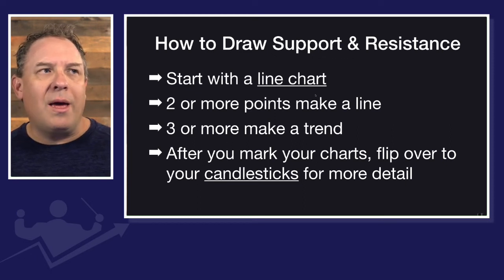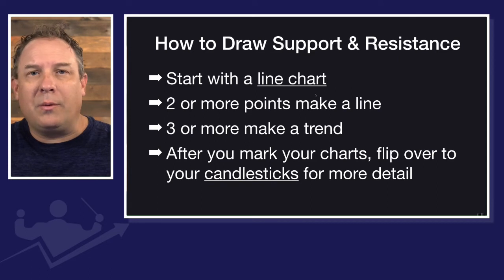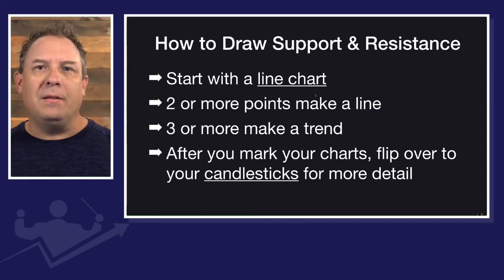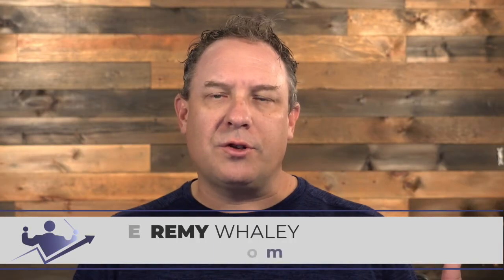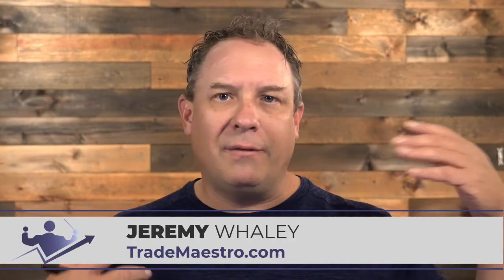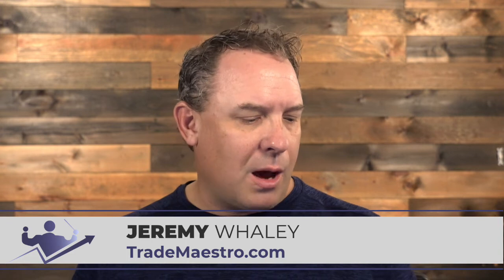So start with a line chart, then move over to a candlestick chart. You're looking for at least two points to establish the line, three points or more will make the trend. After you mark the chart, flip over and look at the candlesticks — you get adjustments or confirmation. Most of the time, the candlesticks just confirm what we've already seen. And now you've seen it — you know the process for drawing your support and resistance lines.